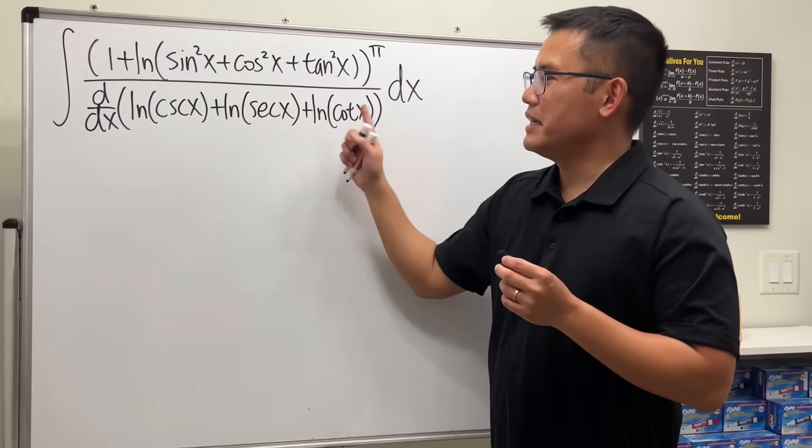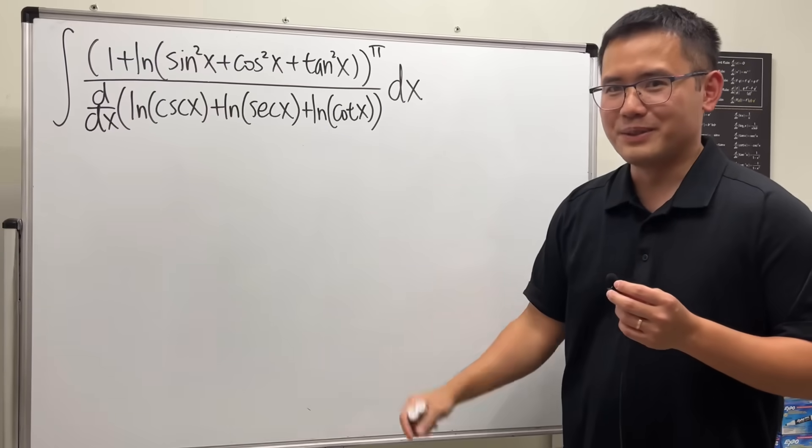we have sine, cosine, tangent, cosecant, secant, cotangent—everybody is here. And now let's see how to solve this.